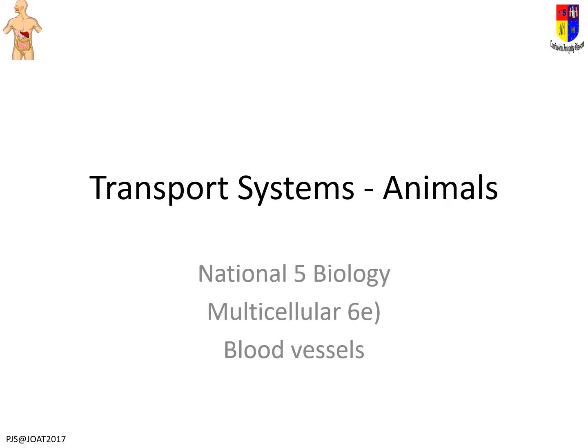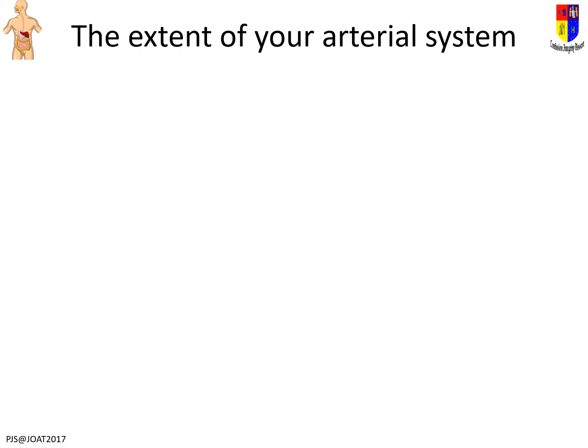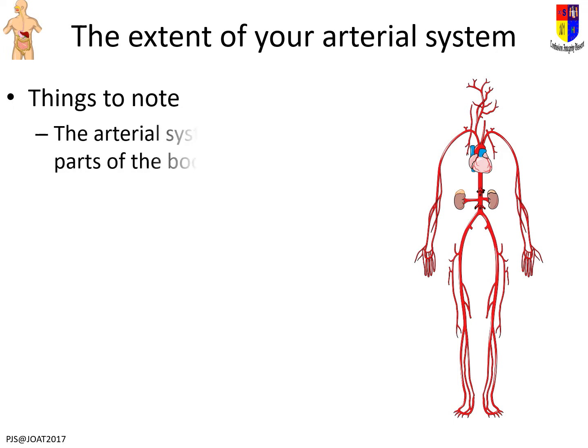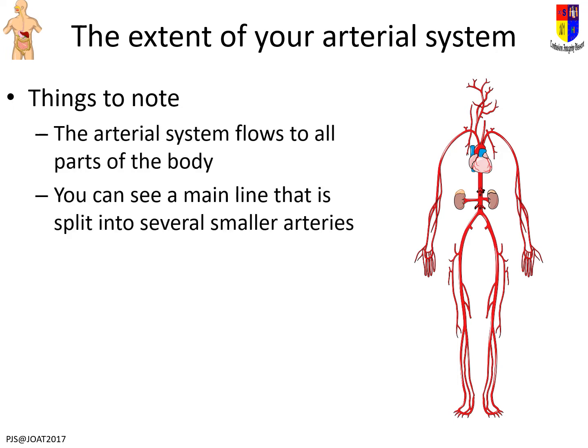This is the transport systems in animals — we are looking at the blood vessels inside you. We're going to look at three types of blood vessel: the artery, the capillary, and the vein. These cover the majority of blood vessels. Your arterial system is spread through your whole body — it is a main line that splits into smaller arteries, coming from the aorta out of the left ventricle.